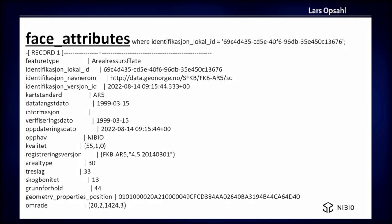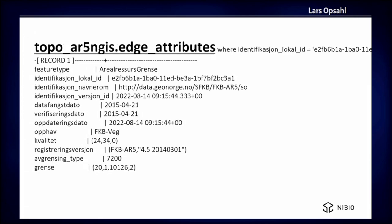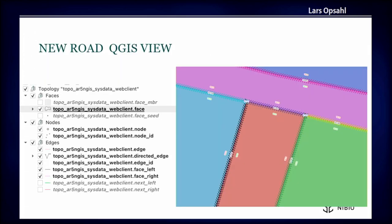This is what it looks like in the database. In the bottom line you have a topology, and here you also have a topology for the border. Here you can see what this looks like in QGIS — scenes from a PostGIS topology world. Sandro will say something about that later.